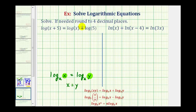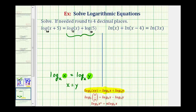Looking at this first equation, notice how each logarithm is a common log, which means it's log base 10. So the first step here will be to combine the logarithms on the right. Since we have a sum of two logs with the same base, we'll use the product property of logarithms to combine the two logs, which means we are going to multiply the number parts of the logarithms together. So the left side will be the same, and on the right side, common log x plus common log 5 is equal to the common log of x times 5, or 5x.